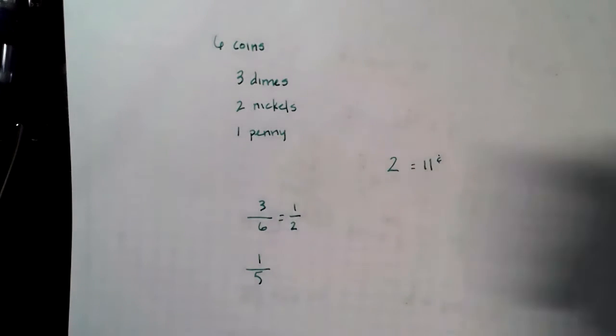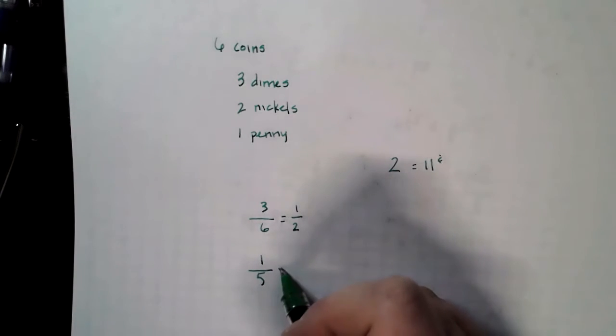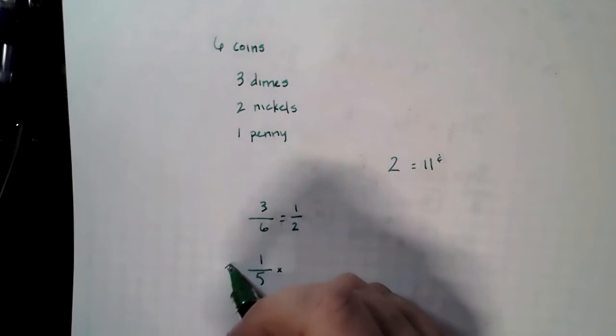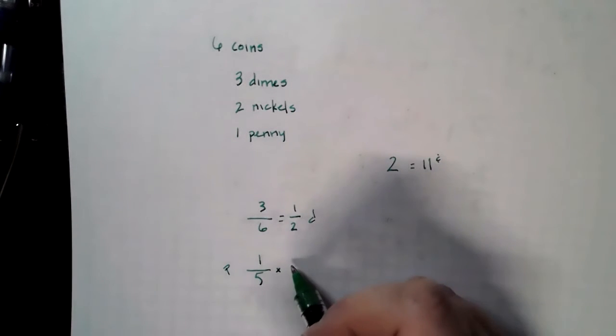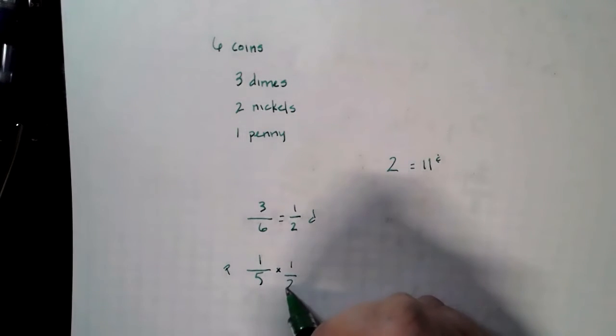Now, we multiply these two together. This is your penny. This is your dime. One-fifth times one-half equals one-tenth.